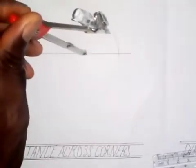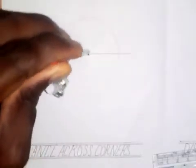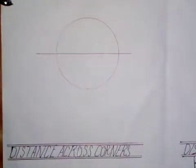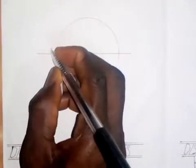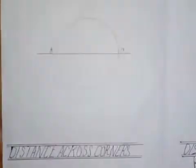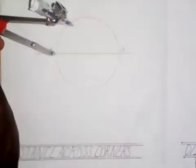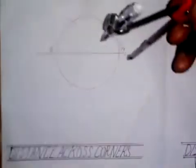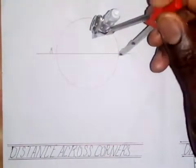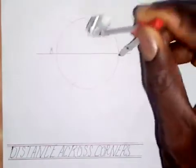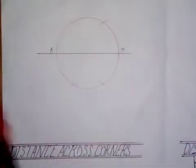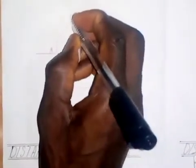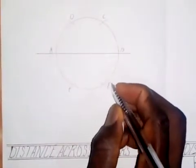Draw a circle as shown. After you have drawn the circle, using the same radius, label this point A and this point B. Using the same radius of 30 millimeters at point A, make an arc up and down. Then put the same radius at point B and draw an arc up and down. This gives you points C, D, E, and F on the circumference.